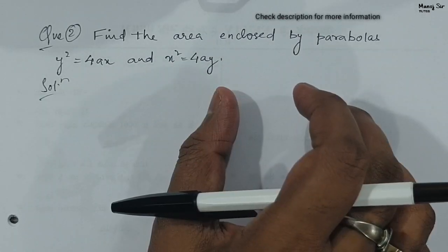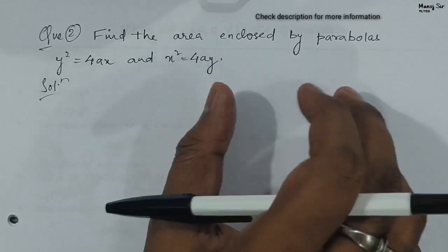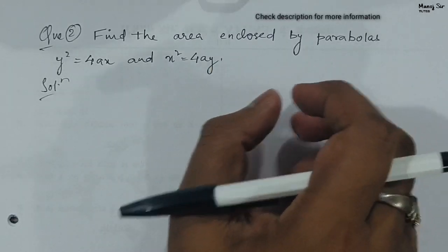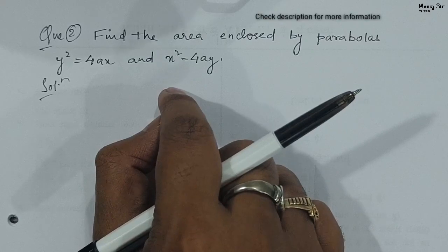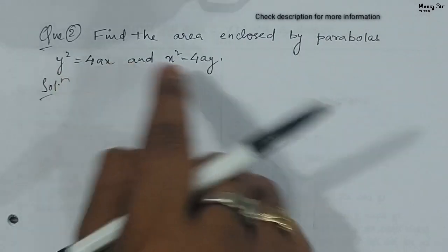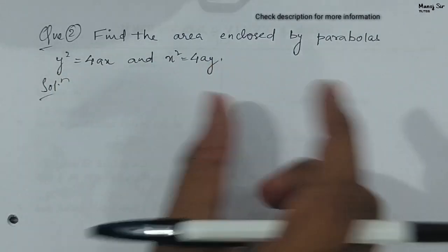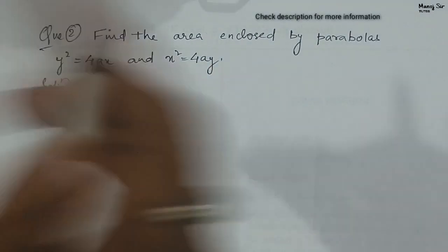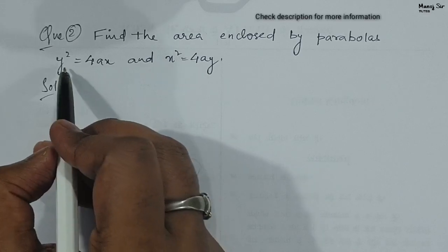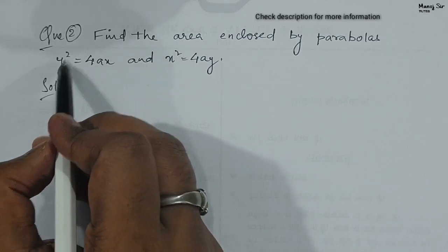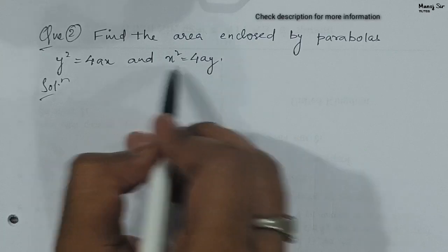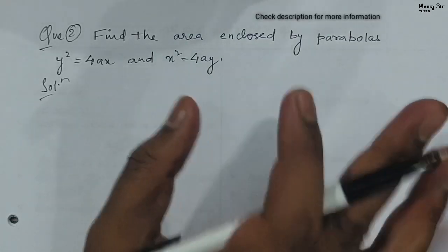In the previous video we solved a question on this topic where we had one parabola and a line. In this particular video we are going to have two parabolas — both equations belong to parabolas. The question says: find the area enclosed by parabolas whose equations are y² = 4ax and x² = 4ay. Both equations are of parabola.